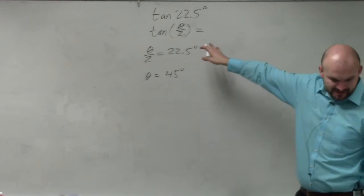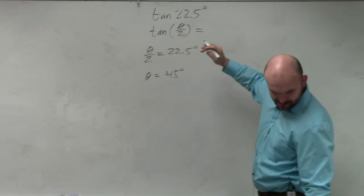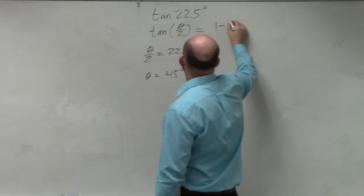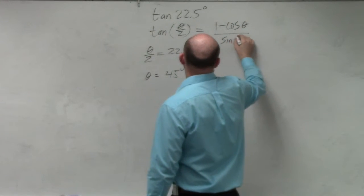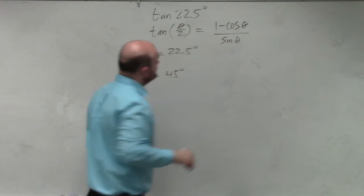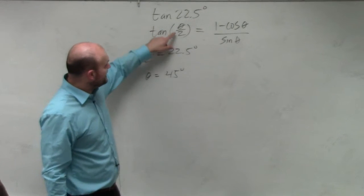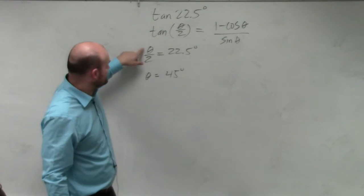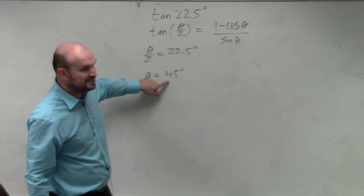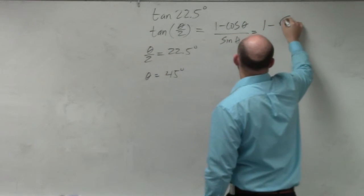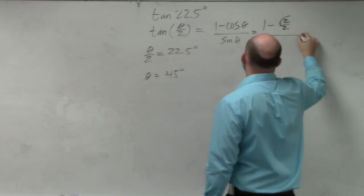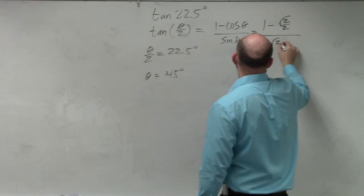Now let's look at the half angle formula for tangent. It's 1 minus cosine of theta over sine of theta. Well, theta is not 22.5—that's theta over 2. We're saying theta is 45 degrees. So it's 1 minus √2/2 divided by √2/2.